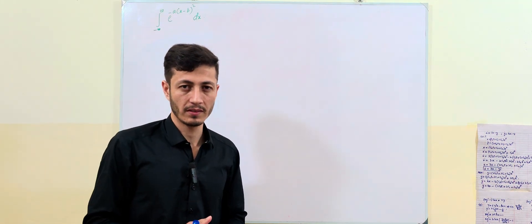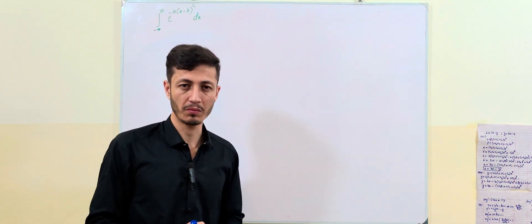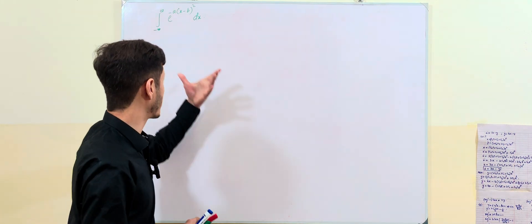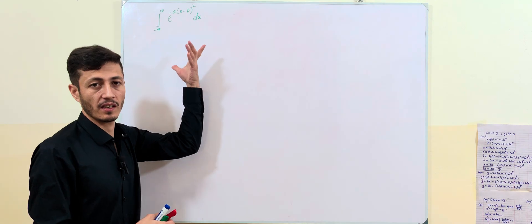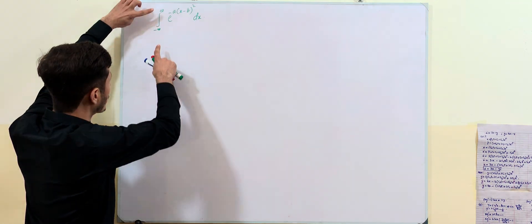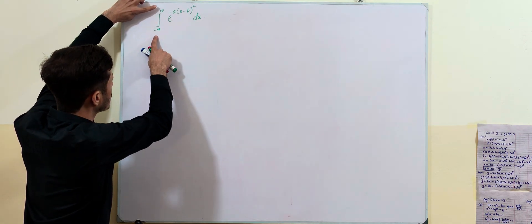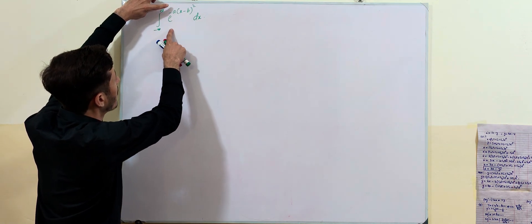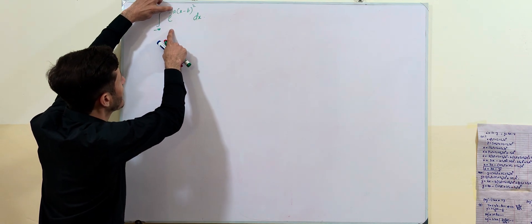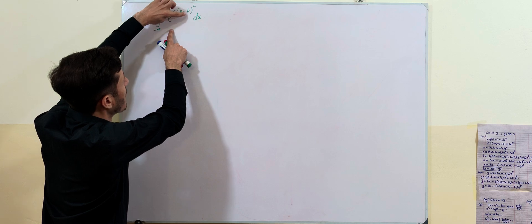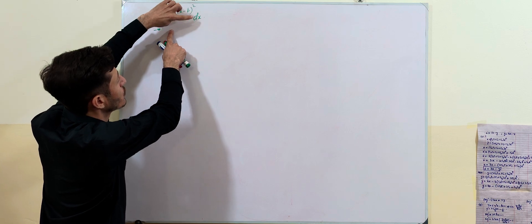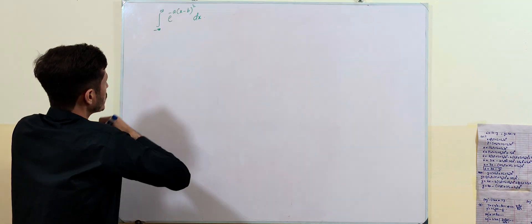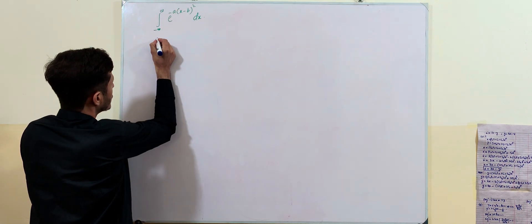Hello everyone, my name is Muhammad Amin. Today I am here to solve the classic integral from minus infinity to infinity of e to the power of minus a times (x minus b) squared, dx.